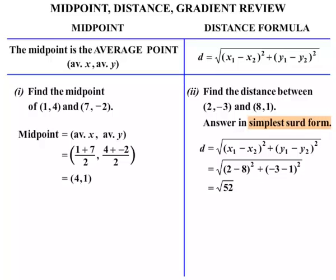Now we need to answer in simplest surd form. Root 52 — how can we simplify that? We can write it as root 4 times root 13. The square root of 4 is 2, so we get 2 times root 13. Our final answer is 2 root 13.